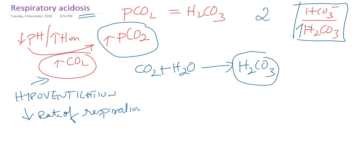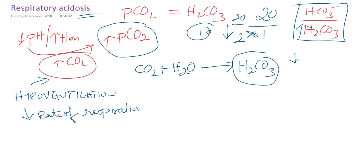What will happen to the ratio now? The normal ratio is 20 to 1. Now imagine the denominator is doubled — the ratio will decrease from 20 to 10. So there will be a decreased ratio of bicarbonate to carbonic acid. Whenever there is increased carbon dioxide, it combines with water via carbonic anhydrase enzyme to form carbonic acid, causing acidosis. This is respiratory acidosis — a fall in pH due to accumulation of carbon dioxide.